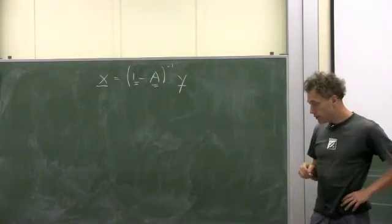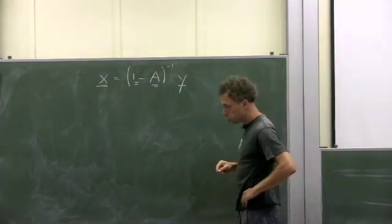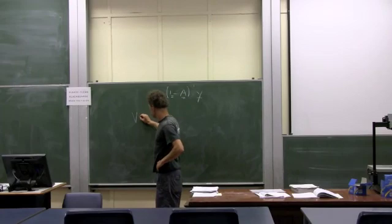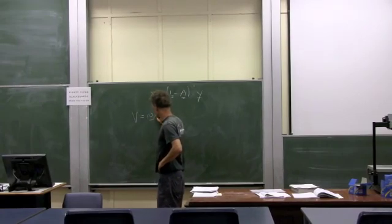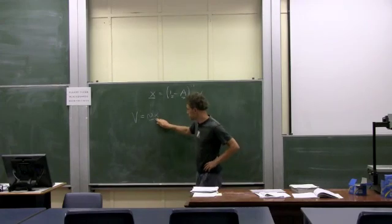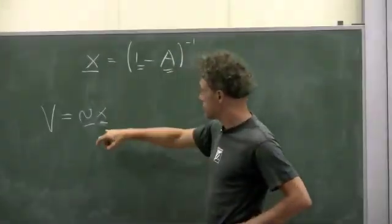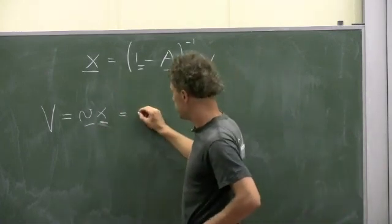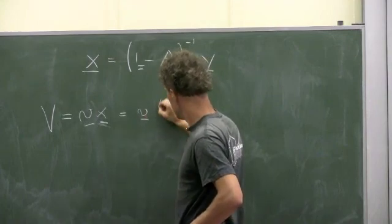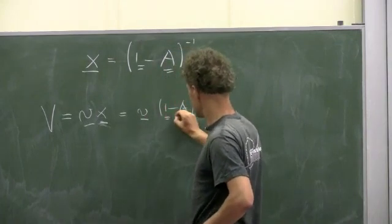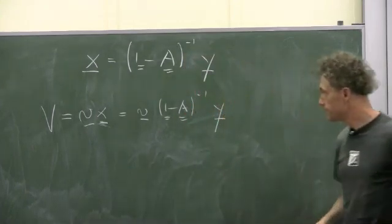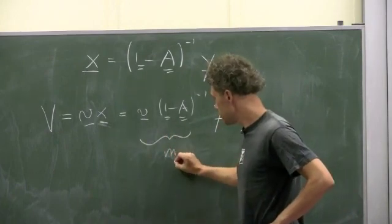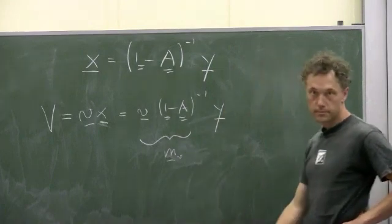And do you remember when we introduced multipliers, we were talking about value added, and that went like this. The total value added is V times x vector, and then we inserted this fundamental IO identity for X. And we got V times one minus A inverse times Y. And we said these were the multipliers for V.